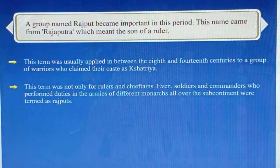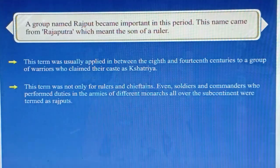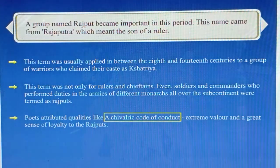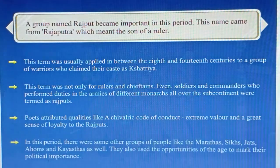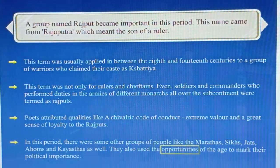This term was not only for rulers and chieftains. Even soldiers and commanders who performed duties in the armies of different monarchs all over the subcontinent were termed as Rajputs. Poets attributed qualities like a chivalric code of conduct, extreme valour and a great sense of loyalty to the Rajputs. In this period there were some other groups of people like the Marathas, Sikhs, Jats, Ahoms and Kayasthas as well. They also used the opportunities of the age to mark their political importance.